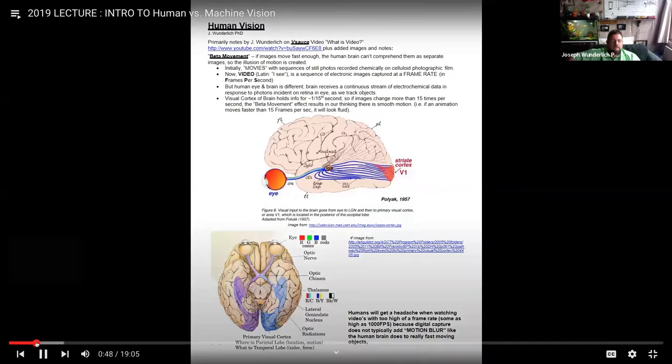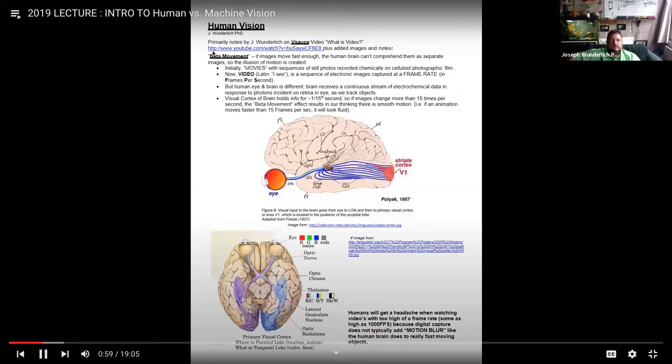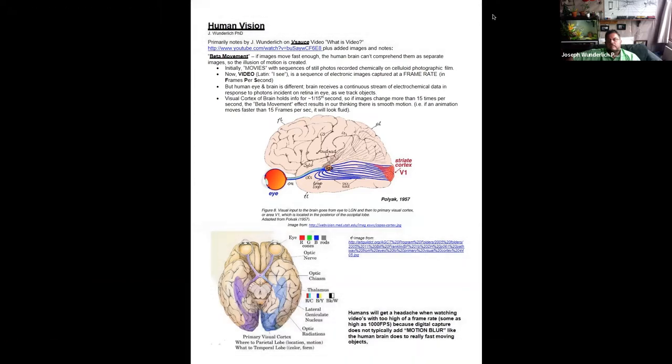We're going to have a lecture on human vision in the context of a course in computing and high-tech fundamentals. We want to understand human vision so we can better understand machine vision and what the computer processes. Firstly, we want to watch this little video clip here. Click on that video and watch a little YouTube video.